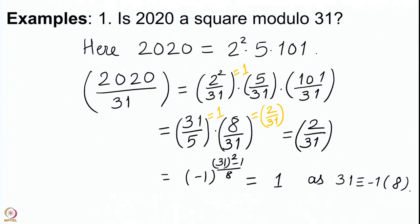We use the second law of quadratic reciprocity to get (2/31) = (−1)^{(31²−1)/8}. Since 31 ≡ −1 mod 8, we get that this exponent is even, so (2/31) = 1. Whenever p ≡ ±1 mod 8, 2 is a square modulo p. Since 31 ≡ −1 mod 8, this confirms that 2020 is a square modulo 31. You may compute its square root by reducing 2020 modulo 31.